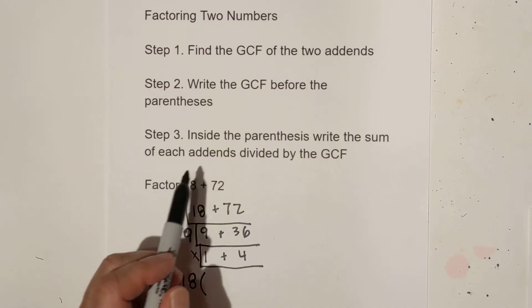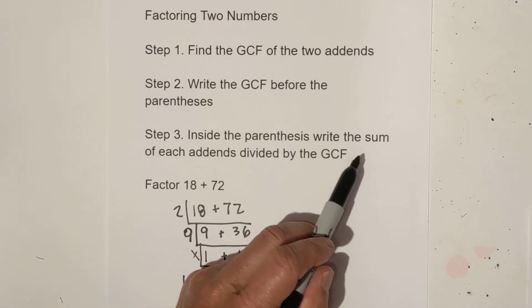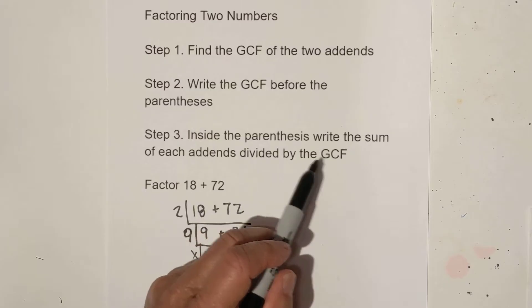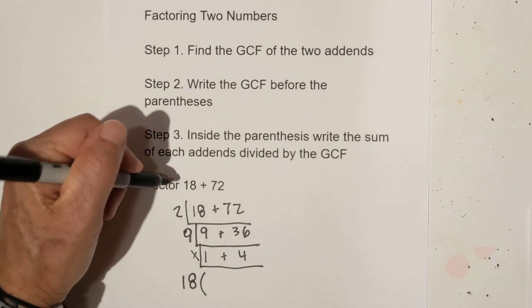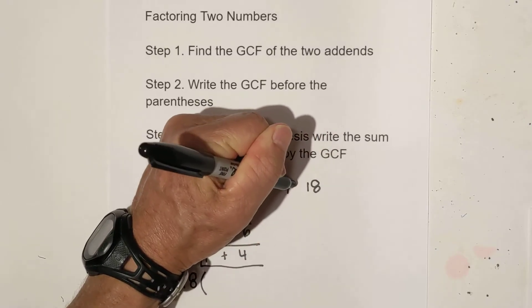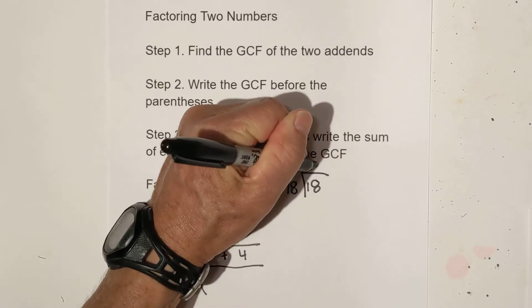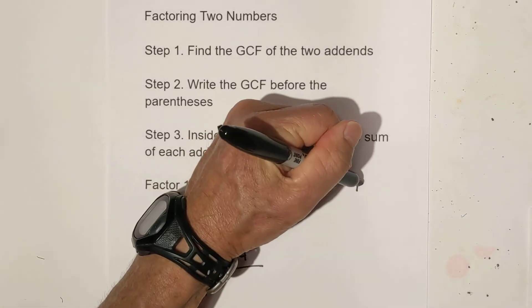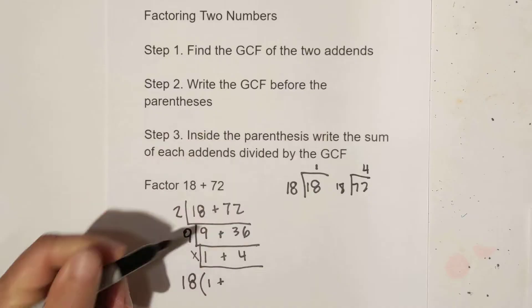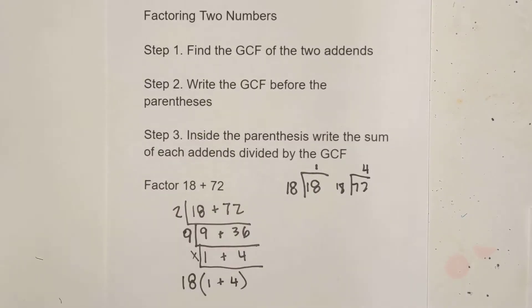And remember the 18 is on the outside of the parentheses. And then inside the parentheses, we're going to write the sum of each addend divided by the GCF. Well, really it's going to be these two numbers here, but let me show you why. So first 18, let's move it over here. 18 divided by 18 is one. So there's the one. And then 72 divided by 18 goes in four times. So there's the four. So here's what we have. We have 18 parentheses one plus four.